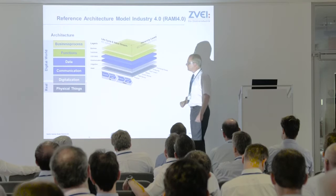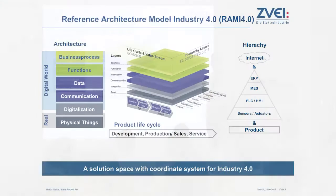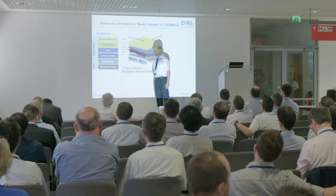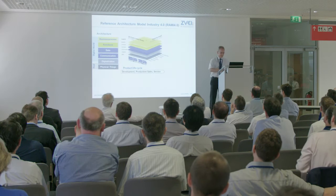The second axis is new for such things — that's the product lifecycle. The product lifecycle goes from the first idea, through development, up to production, sales, and then service. So we want to have, for example, data on the information level from the first idea through development up to the service department — we want to bring all the data together in this reference architecture model.